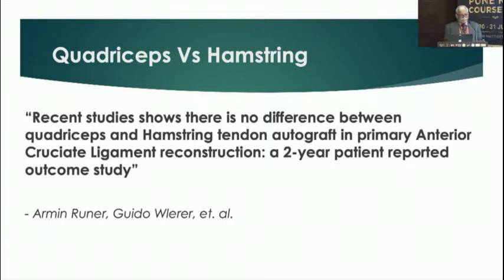When comparing quadriceps tendon with hamstrings, various studies show there is no significant difference in tear rate between these two tendons.